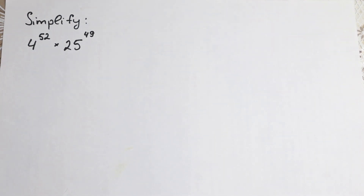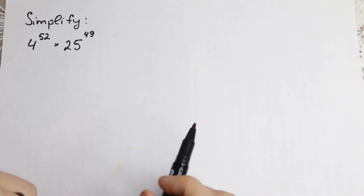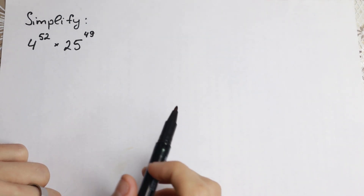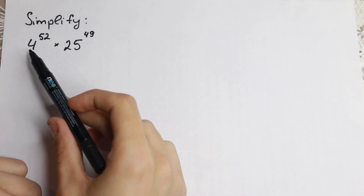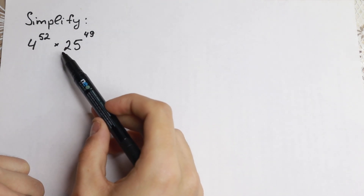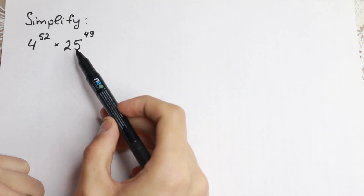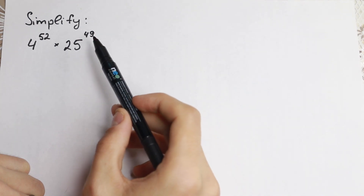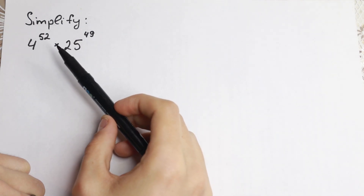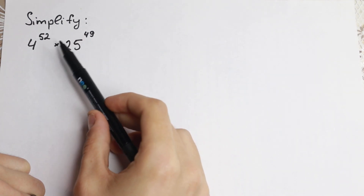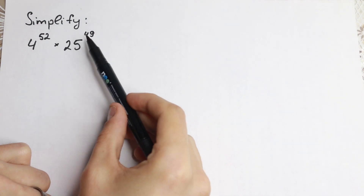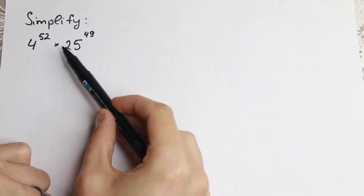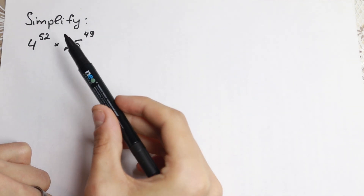Hello everyone! Welcome back to MathMod. Really interesting problem today. We need to multiply these two values. We have 4 to the power of 52 and 25 to the power of 49. On the first side this problem is really hard because we have a really huge power, different power, different base in both cases.